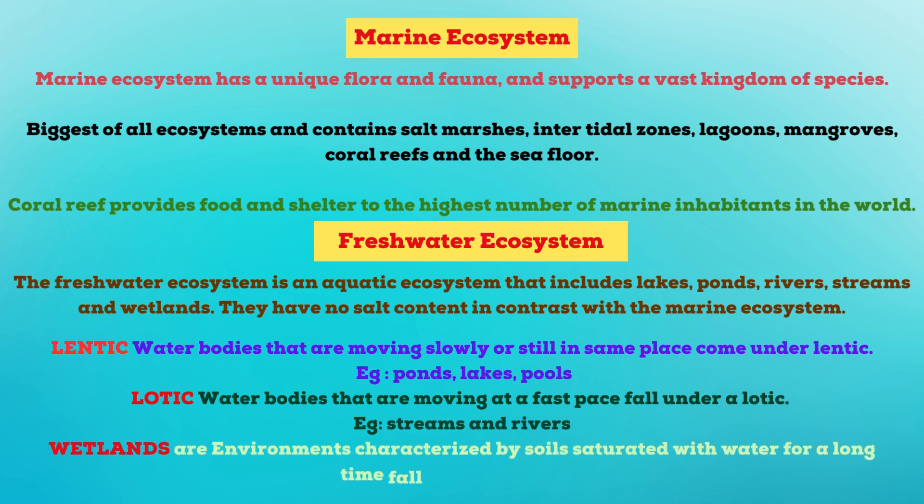Marine ecosystem has unique flora and fauna and supports a vast kingdom of species. It is the biggest of all ecosystems and contains salt marshes, intertidal zones, lagoons, mangroves, coral reef and the sea floor. Coral reef provides food and shelter to the highest number of marine inhabitants in the world.